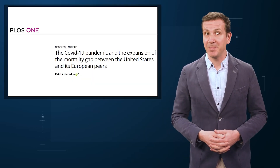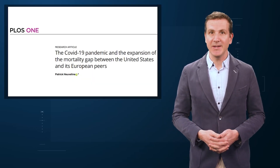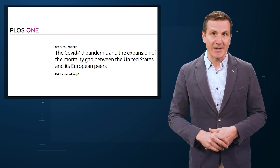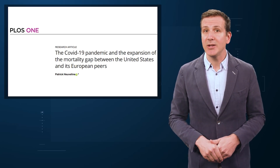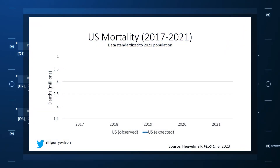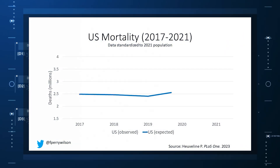The best way to get around that is to use data from other countries. That's just what this article — a rare single-author piece by Patrick Heuveline — does, calculating excess deaths in the US by standardizing our mortality rates to the five largest Western European countries: the UK, France, Germany, Italy, and Spain, controlling for the differences in demographics of that European population.